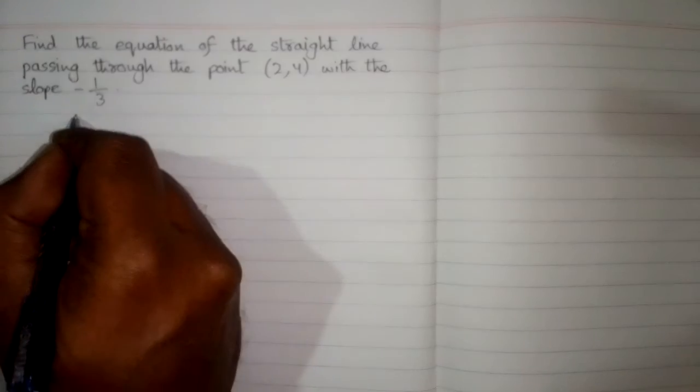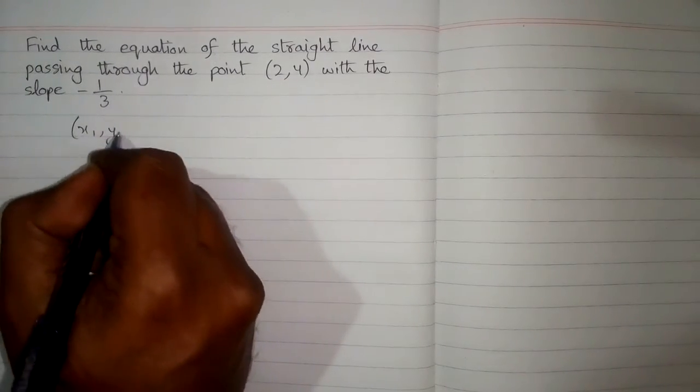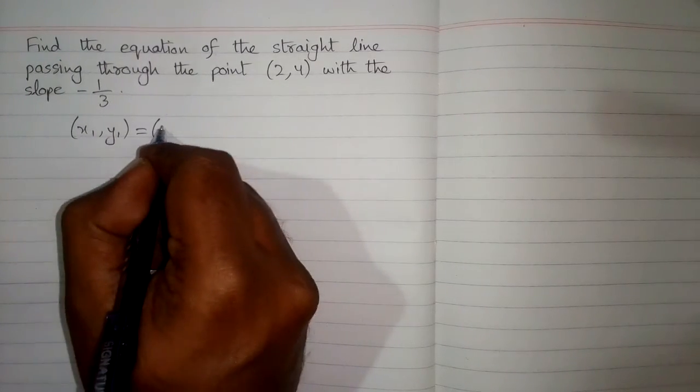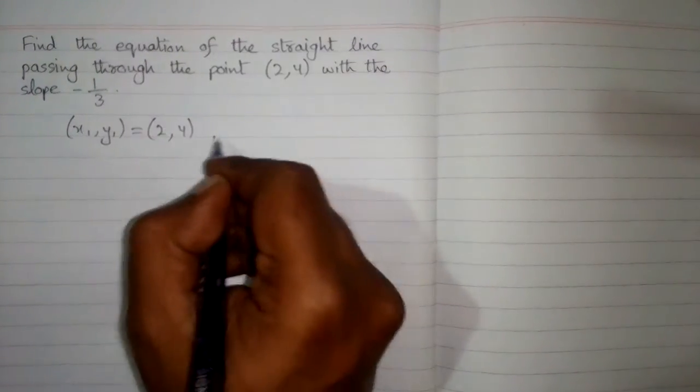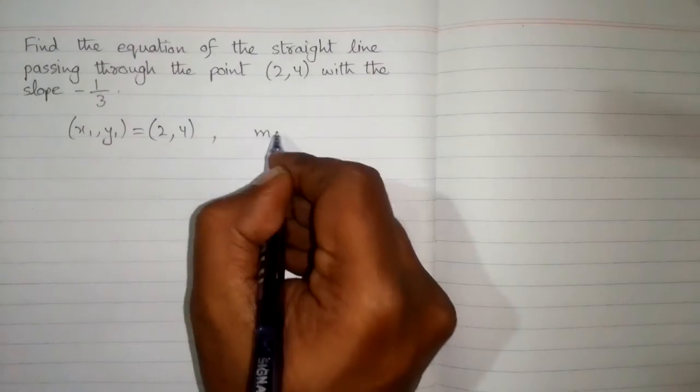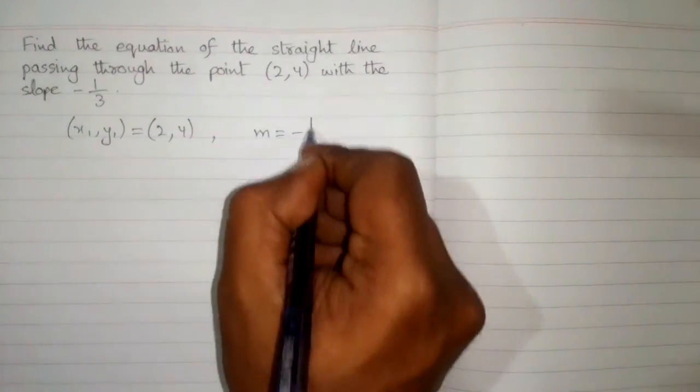So suppose this point is x1, y1. So x1, y1 is equal to 2 comma 4 and suppose the slope is m which is equal to minus 1 upon 3.